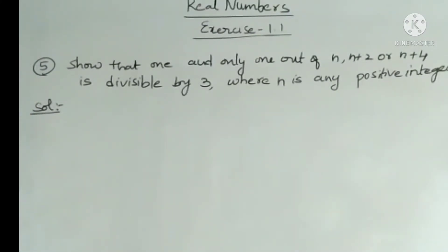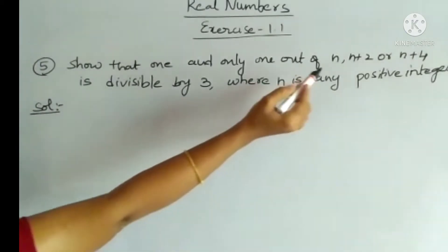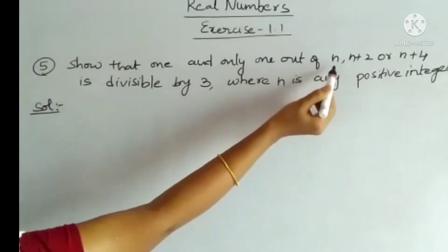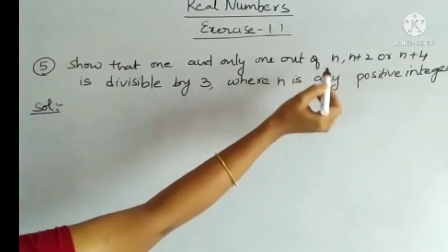Welcome to my channel. Today we will see another problem solution in Exercise 1 of Real Numbers. The problem is: show that one and only one out of n, n+2, or n+4 is divisible by 3, where n is any positive integer. Not all three are divisible by 3 — only one. That means if n is divisible by 3, then n+2 and n+4 are not divisible by 3.